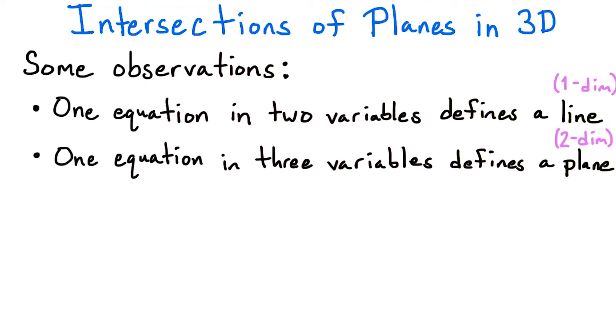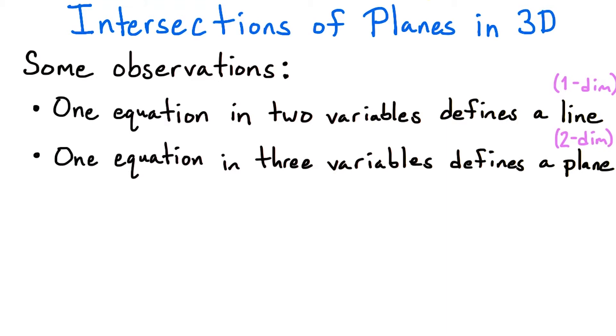In general, a single equation in some number of variables will define a linear object that has a number of dimensions one less than the number of variables.